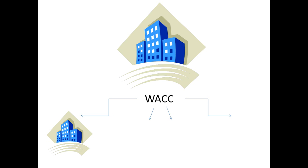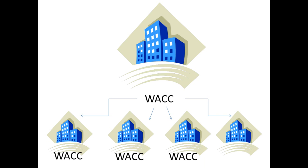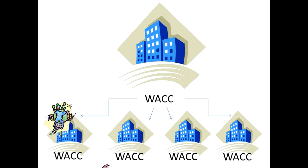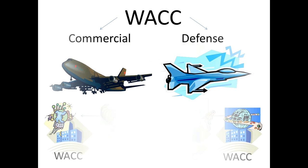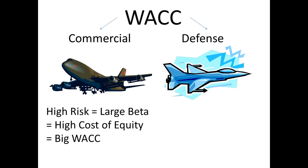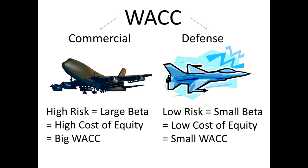A majority of large corporations do business in many different industries. These different divisions within a company are not all subject to the same economic environment; therefore, they are subject to different levels of risk. For example, Boeing builds airplanes for commercial use and for the Department of Defense. The commercial division is obviously going to have a higher level of risk, which means it has a higher beta, a higher cost of equity, and therefore a higher weighted average cost of capital.